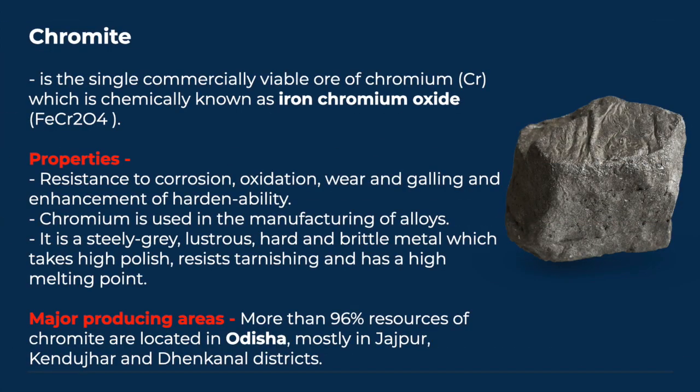Chromite is the single commercially viable ore of chromium, which is chemically known as iron chromium oxide. Its properties are resistance to corrosion, oxidation, wear and galling, and enhancement of hardenability. Chromium is used in the manufacturing of alloys. It is a steely grey, lustrous, hard and brittle metal, which takes high polish, resists tarnishing, and has a high melting point. More than 96% resources of chromite are located in Odisha, mostly in Jajpur, Kendujhar, and Denkinal districts.